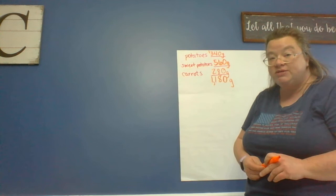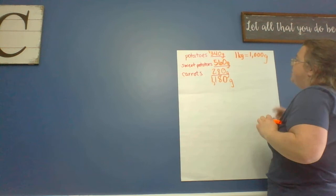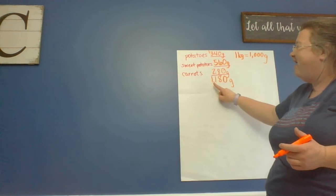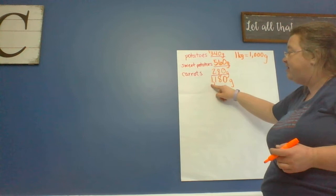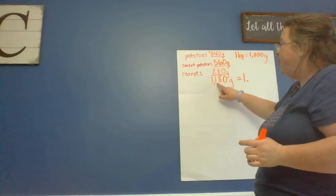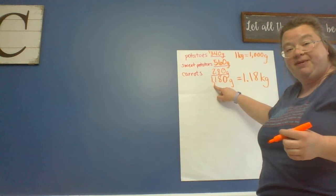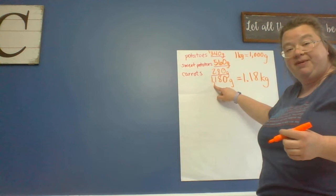But the question asked how many kilograms, and 1 kilogram equals 1,000 grams. We have 1,180 grams — that 1,000 grams is the same as one kilogram. So we bring our decimal friend back: this is going to be 1.18 kilograms. We're replacing the comma with a period and changing this into a decimal — 1.18 kilograms.